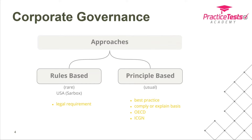Corporate governance as a regulatory environment can take one of two forms. A rules-based approach is where you typically have legislation — like in the USA, the Sarbanes-Oxley Act, sometimes shortened to Sarbox. That's a legal requirement for companies to follow the rules laid down in the Act. If you don't comply, there are legal consequences — you can be taken to court, and could potentially be sent to prison. It's a relatively strict, legally enforceable regime.